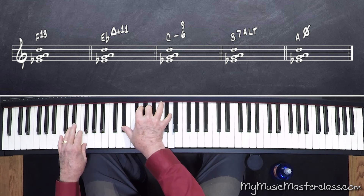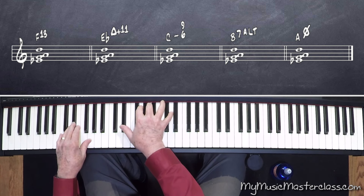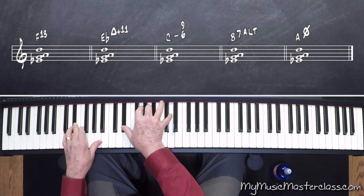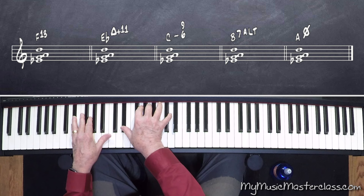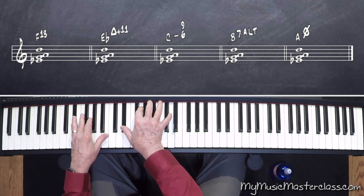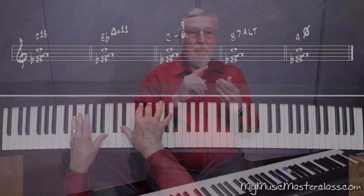I can put an E-flat under it. Now it's an E-flat major 7 sharp 11 — root, 3rd, sharp 4 or sharp 11, and major 7.